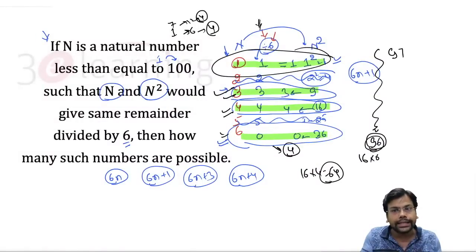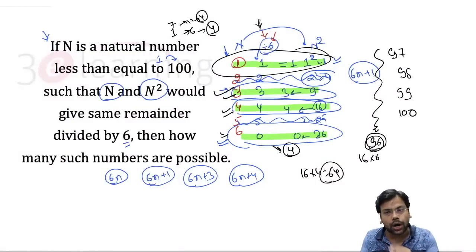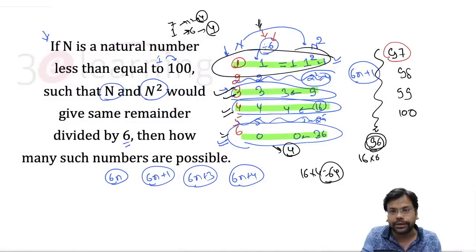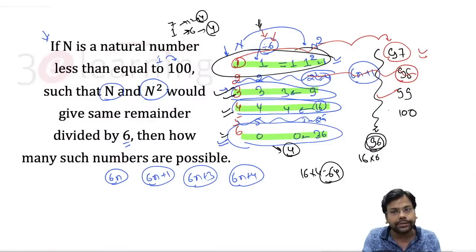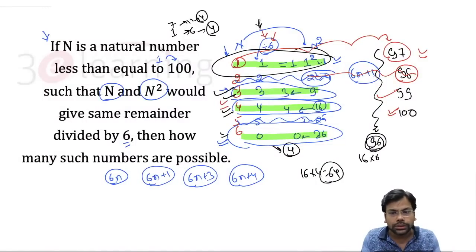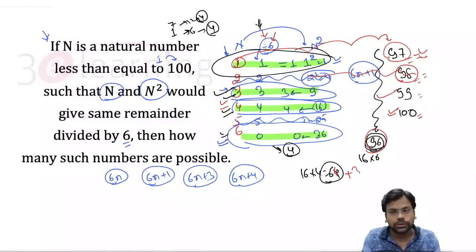Now we check the remaining numbers 97, 98, 99, and 100 which are outside the complete bundles. 97 divided by 6: remainder 1 — not needed. 98 divided by 6: remainder 2 — not needed. 99 divided by 6: remainder 3 — needed. 100 divided by 6: remainder 4 — needed. So 97 is also needed (remainder 1 matches). We get 3 more numbers: 97, 98, and 100. So total = 64 + 3 = 67.